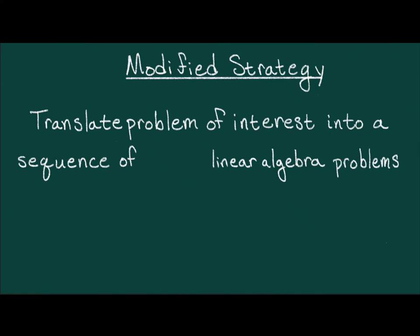So, with this in place, I'd like to modify our strategy. Translate your problem of interest into a sequence of higher linear algebra problems. To be honest, I kind of made up the term higher linear algebra. A standard mathematician would refer to what I'll be talking about as homological algebra. And, against my better judgment, I've decided to call this series homological algebra, just so that it's more Google-able.